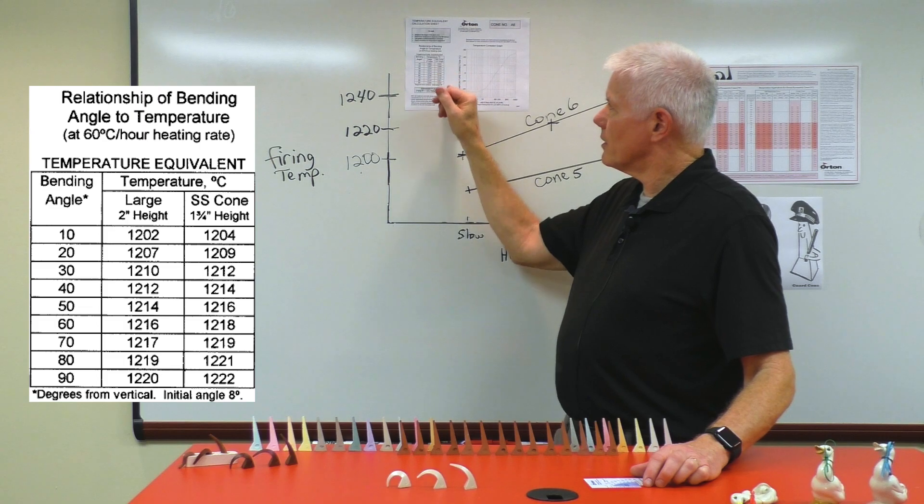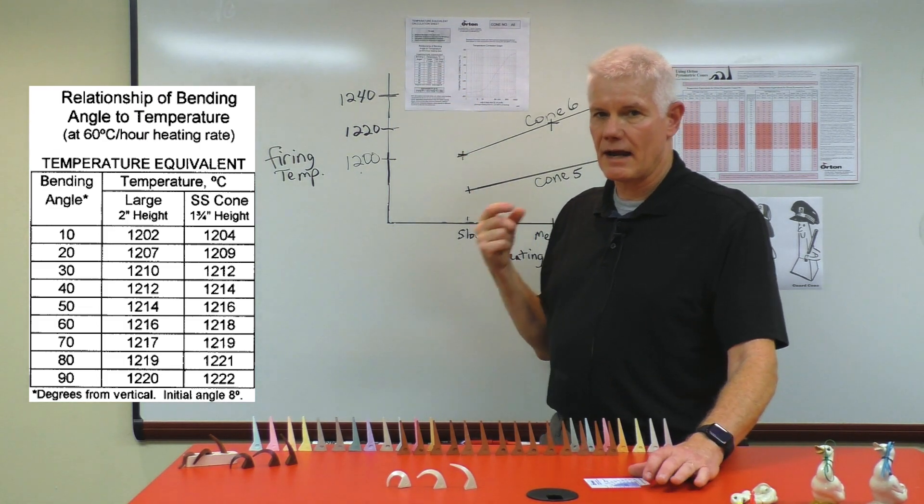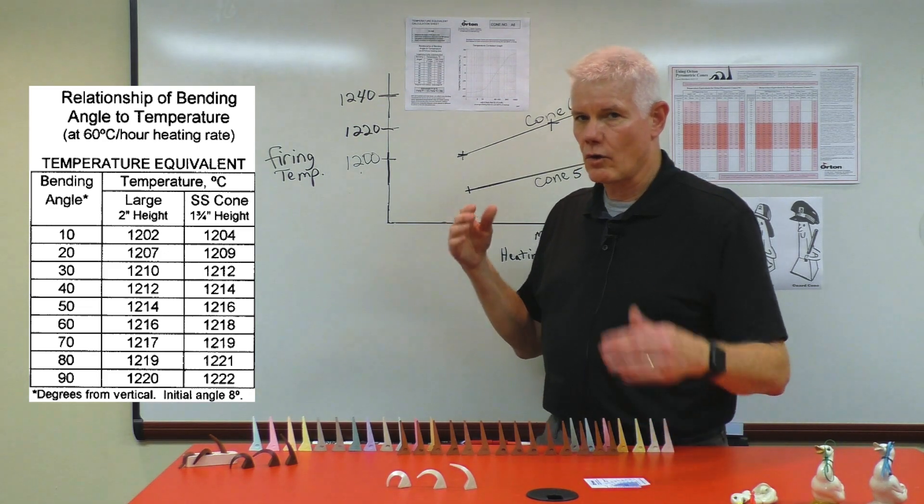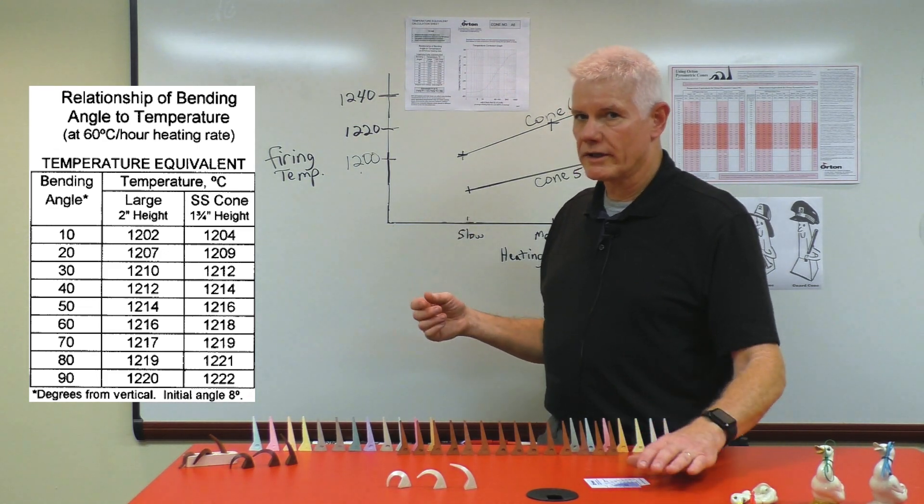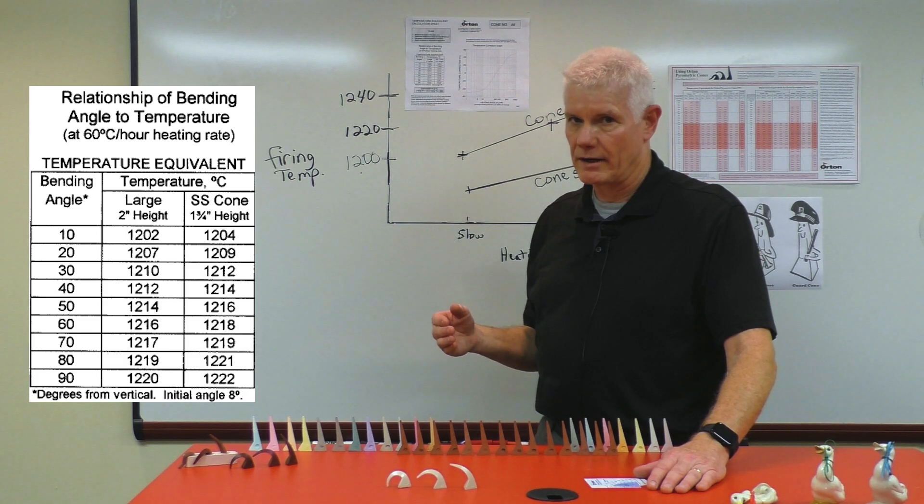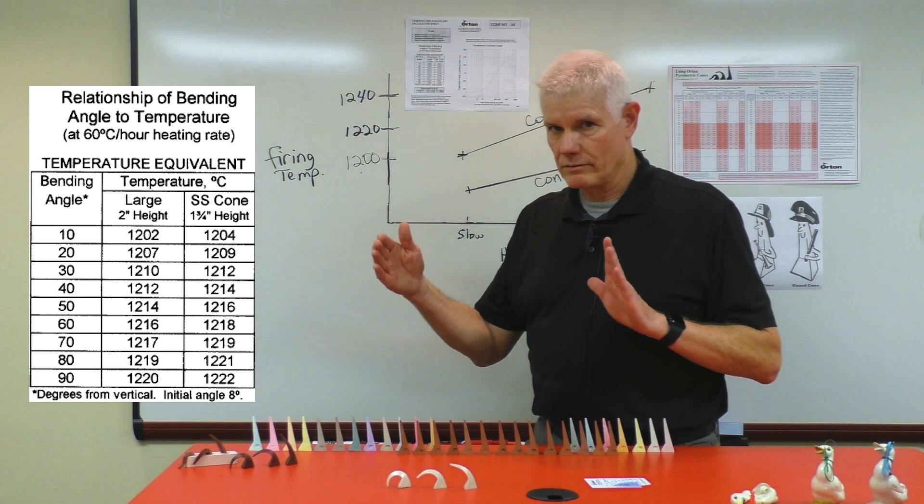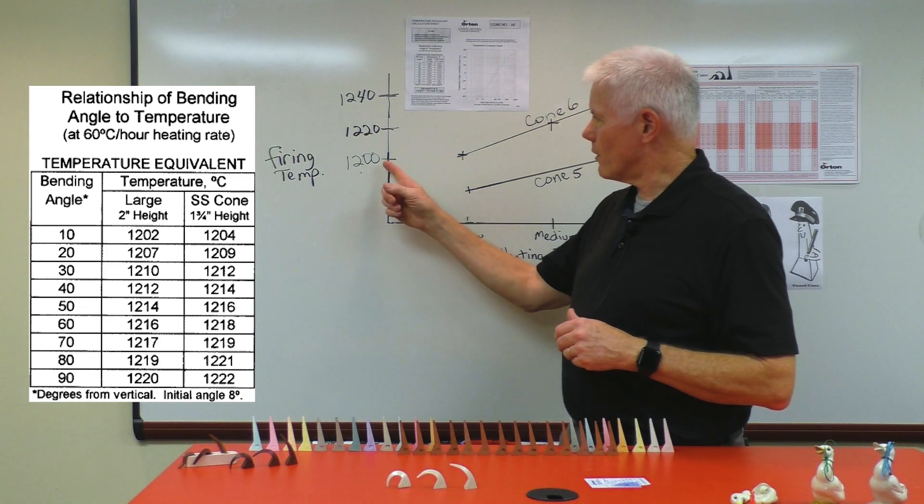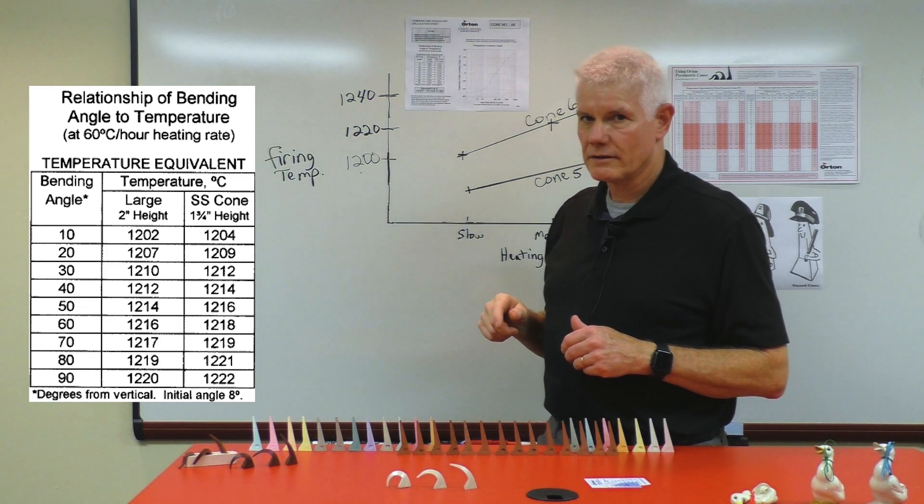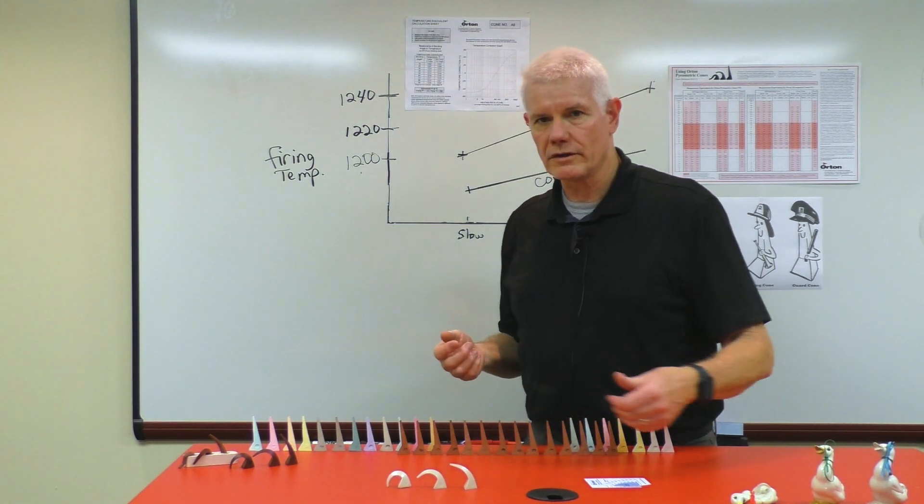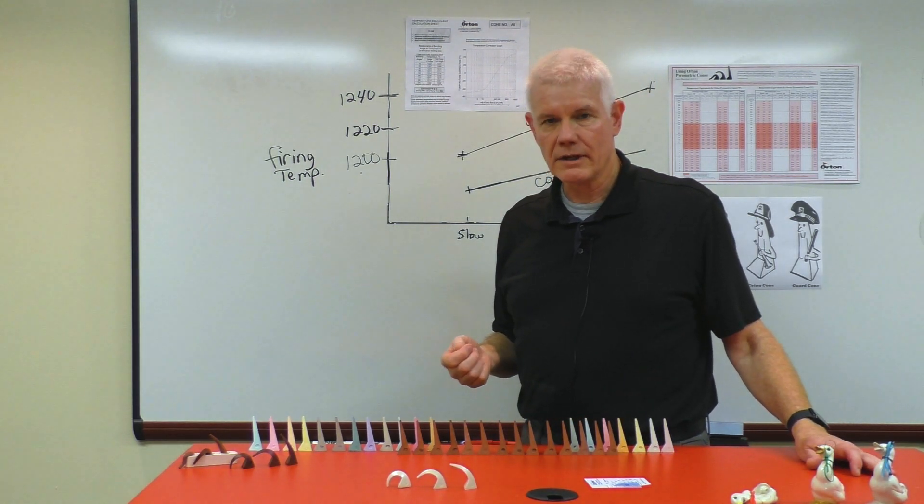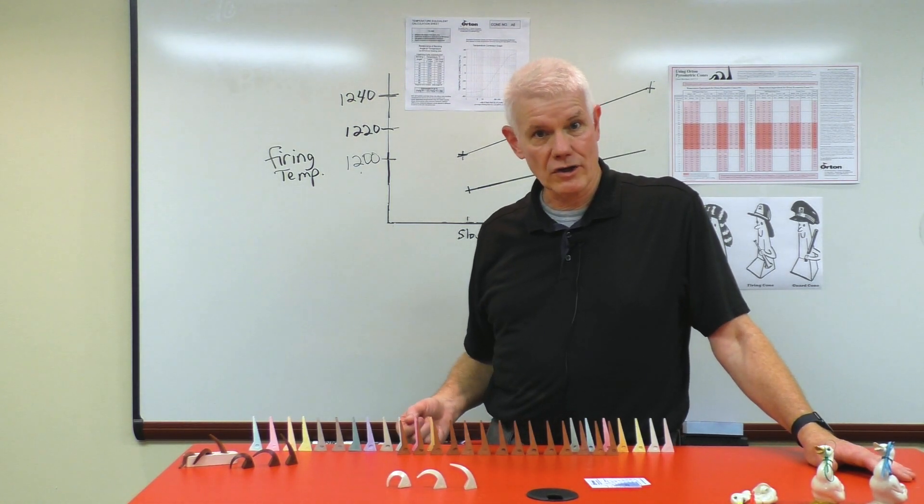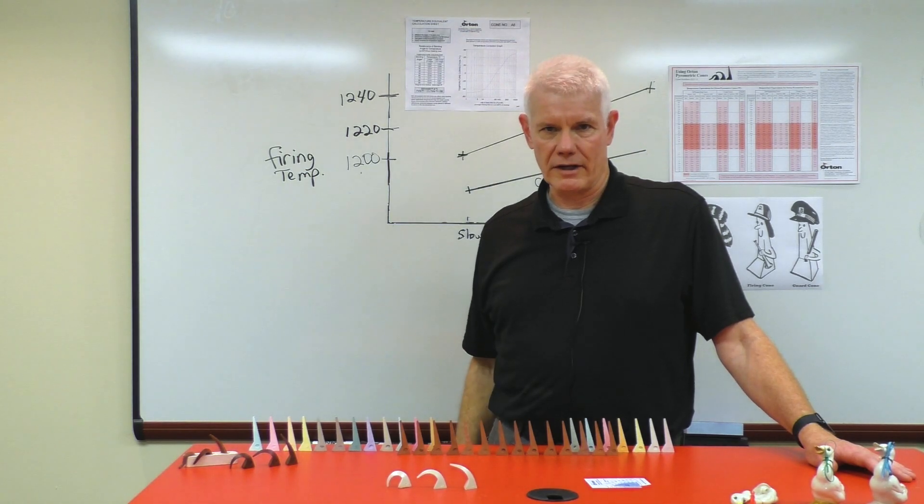But what you'll see here in this chart is that the temperatures at which a cone starts to deform, the total range is only anywhere from 17 to 20 degrees centigrade. So there's your window. If you've entered that window anywhere from 1200 to 1240 and you've got the cone to start bending over and the ceramic that you're firing looks good, that becomes your target. So there's your target range of the middle.